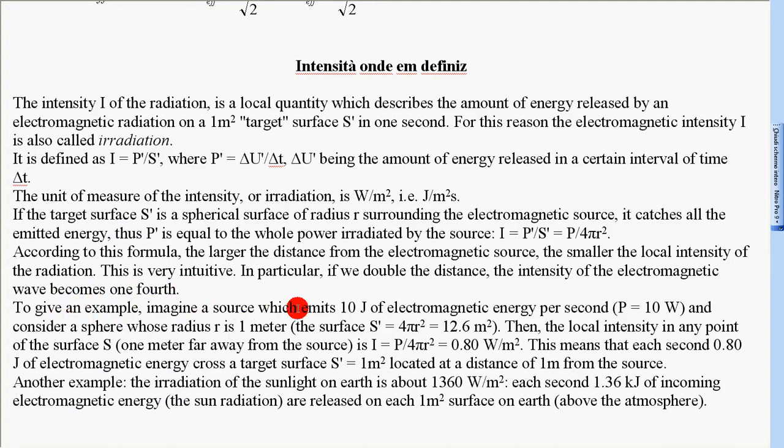To give an example, imagine a source which emits 10 Joules of electromagnetic energy per second, P = 10 Watt. And consider a sphere whose radius R is 1m, the surface S' = 4πR² = 12.6 m².